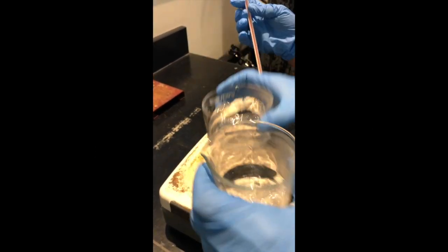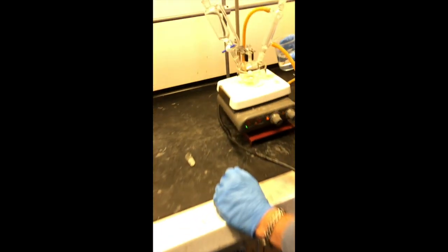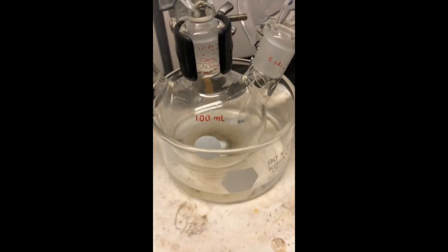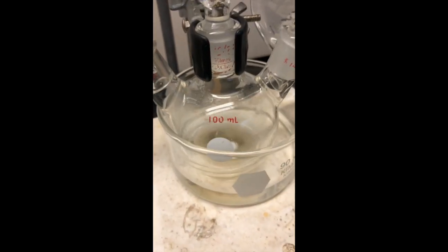Warm water that we've been warming outside the hood so we don't risk fire. We're going to add the warm water to the crystallizing dish to make sure the reaction keeps going. You can see the reaction continues to get more and more cloudy.